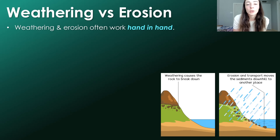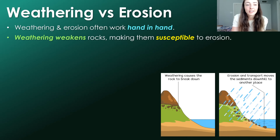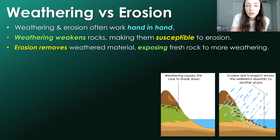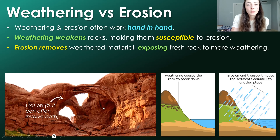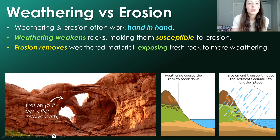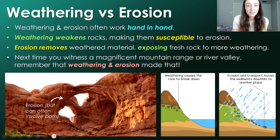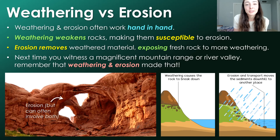Weathering and erosion almost always work hand in hand. Weathering weakens rocks, making them susceptible to erosion, and erosion removes weathered material, exposing fresh rock for more weathering. Getting back to our rock arch: things like wind and water can cause rock arches to form, but this process often involves both weathering and erosion. If caused by wind erosion, it's mostly just erosion. But if formed by water erosion, it may also involve some dissolution, which is considered weathering. The next time you witness a magnificent mountain range or river valley, remember that weathering and erosion work together to make that.